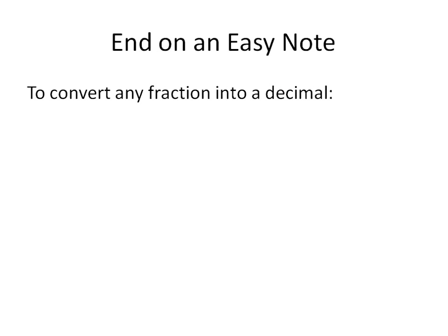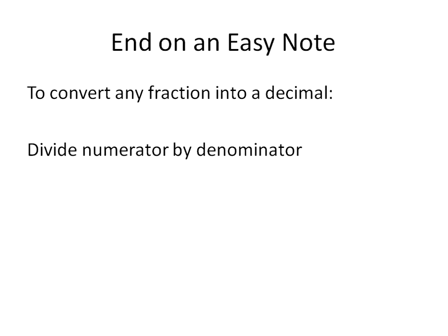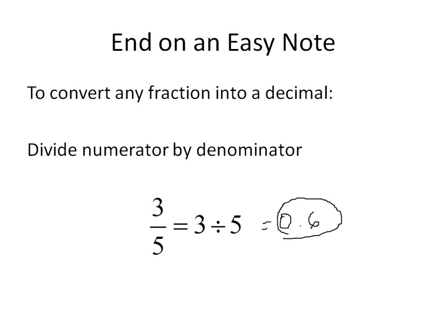Now, to end on an easier note: when you want to convert a fraction into a decimal, that's really easy and straightforward. You just take the numerator and divide by the denominator. For example, 3 over 5 — if I wanted to convert that into a decimal, I just do 3 divided by 5 and get 0.6. And we're done. That is how we convert from fractions into repeating or terminating decimals. In the previous slides, I also showed you how to convert from terminating and repeating decimals into fractions.